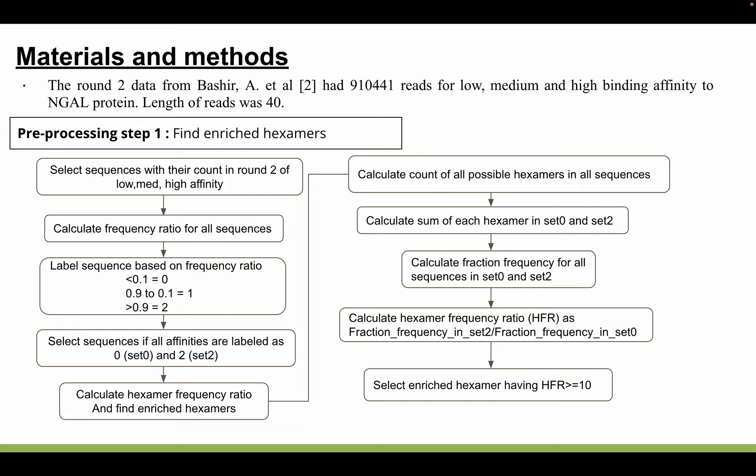We collected round two data from Bashir et al. It had different binding affinity reads. These reads were used to calculate the frequency ratio. Based on the frequency ratio, each read was labeled as zero, one, or two for all affinities. To identify overrepresented hexamers for better binding sequences, we calculated the hexamer frequency ratio, and the cutoff was set at 10. Only 20 hexamers were able to pass this cutoff.